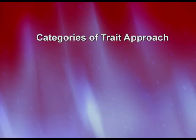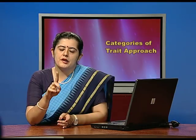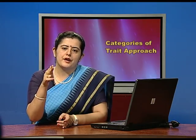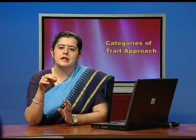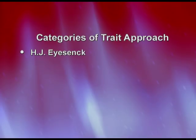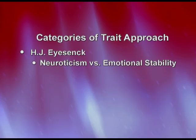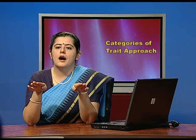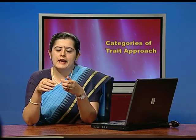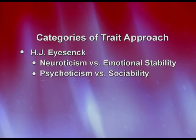The next trait theory is H.J. Eysenck's. He developed the Maudsley Personality Inventory, which measures the first two components, and later developed the EPQ — the Eysenck Personality Questionnaire — when he added a third component. The first dimension is neuroticism versus emotional stability, looking at whether you are anxious or calm. The second is extraversion versus introversion. The third is psychoticism versus sociability, covering anti-social personality traits like being egocentric and hostile.